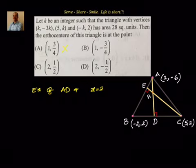So we can rule out the two answer options that don't have x = 2. The answer is either option C or D, but we need to do a little more work. Let us find the equation of CE.